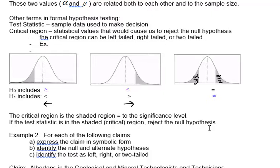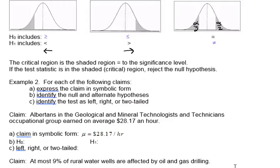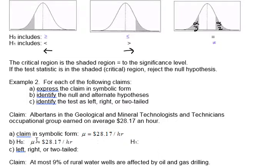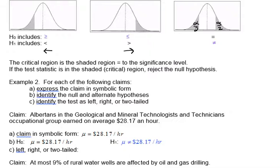Let's do a couple of examples where we set up the original hypotheses without doing calculations. The first claim is the group earning on average $28.17 an hour. In symbolic form, H0: μ = $28.17 per hour. The alternate hypothesis is the opposite, so H1: μ ≠ $28.17. Since we have equals vs. does not equal, this is a two-tailed test.